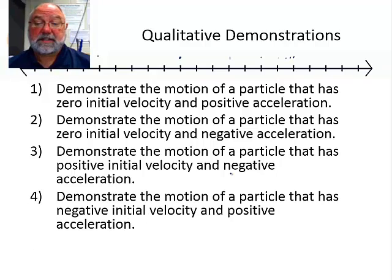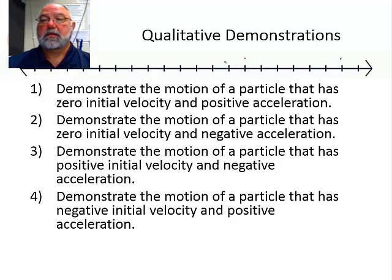Particle that has negative initial velocity and positive acceleration. We're going to be slowing down as we travel in the negative direction. Each dot is one second apart. We're heading in the negative direction and slowing down. That means our signs of velocity and acceleration are opposite.